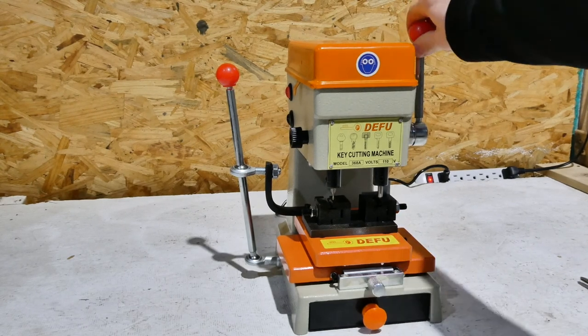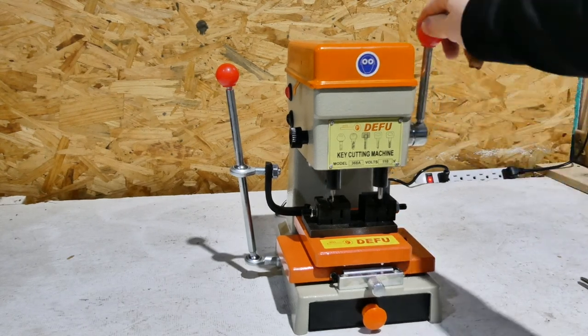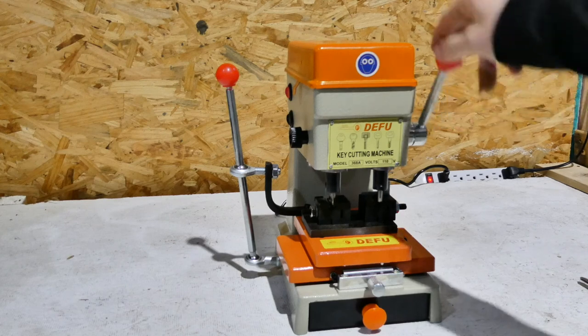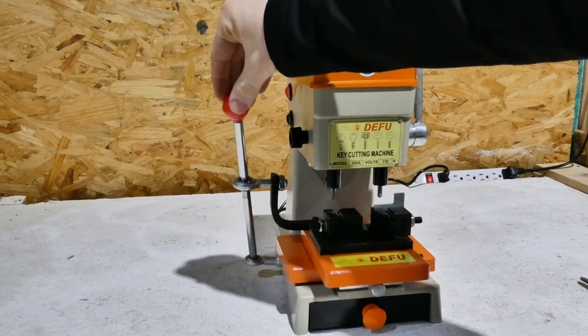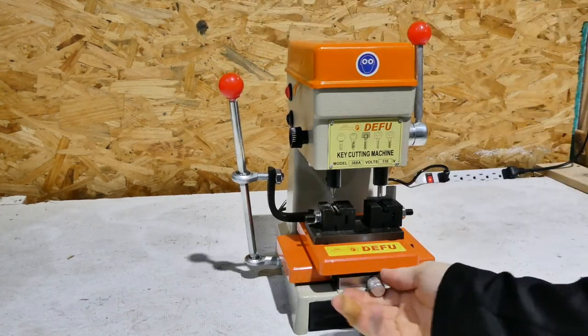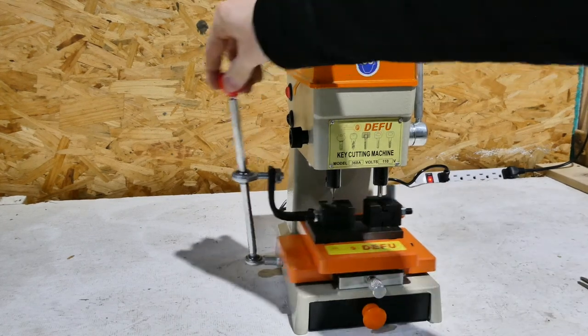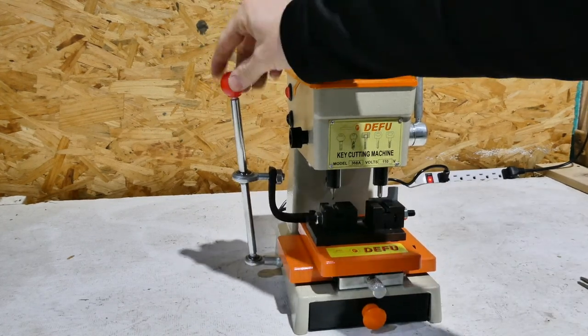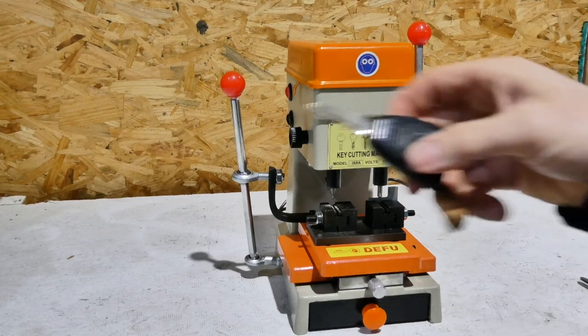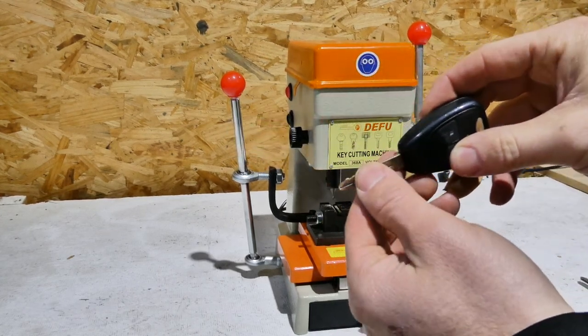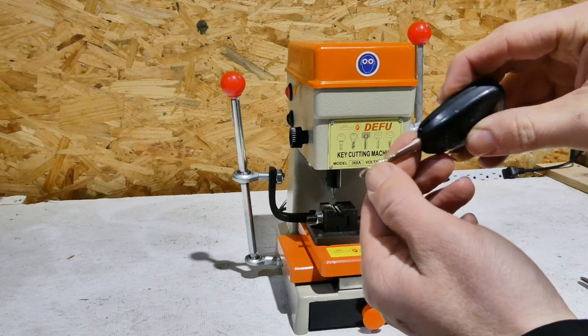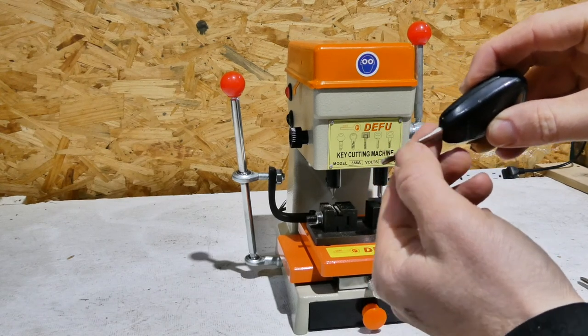So the handle on the right controls the depth of your cut and this one will move it around. You've got a lock in the front to keep it locked from going side to side so you can lock in line and just go up and down these ridges.